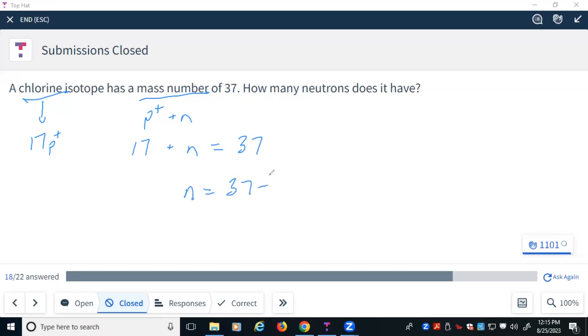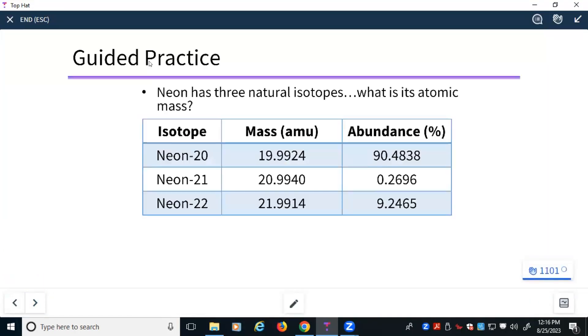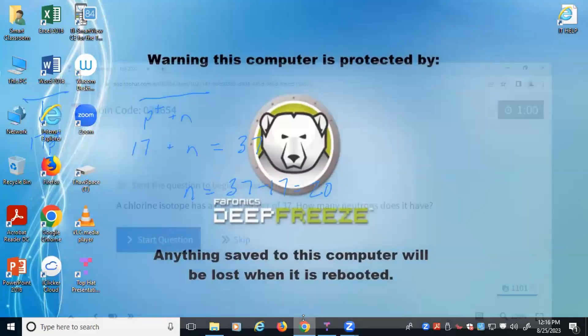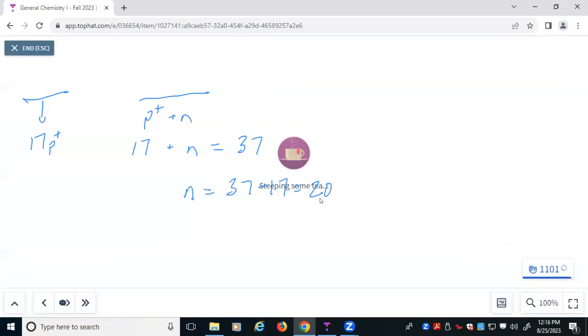37 minus 17 would be 20 neutrons. So we were looking for an answer of 20. All right, let's take a look at another review question.